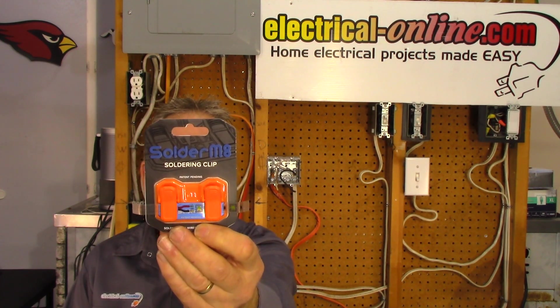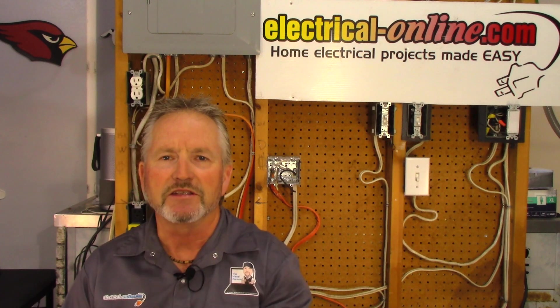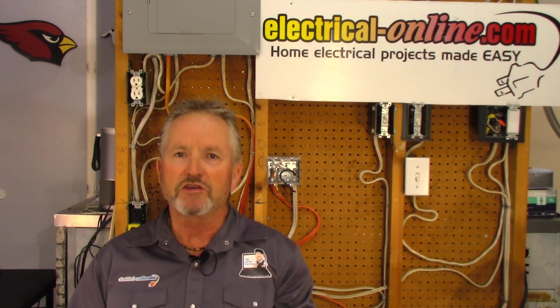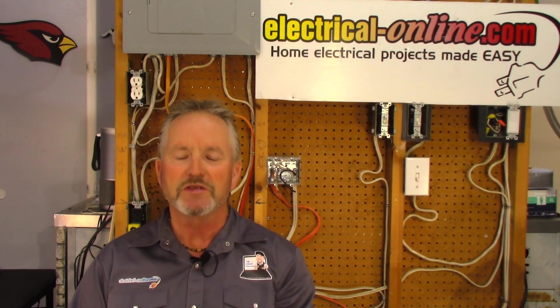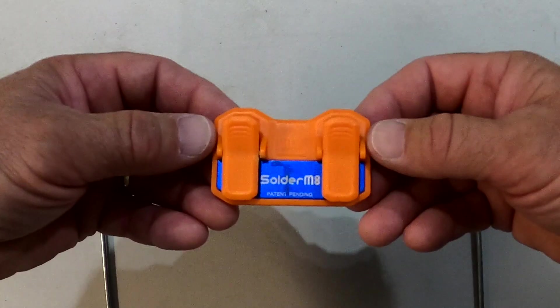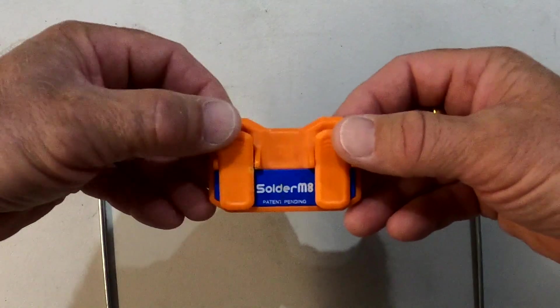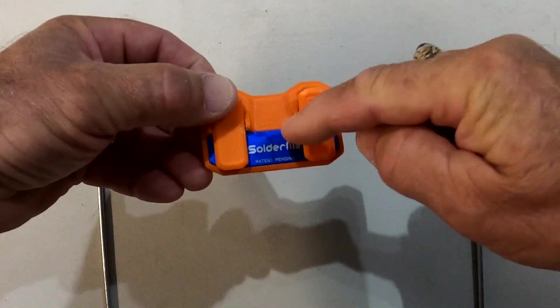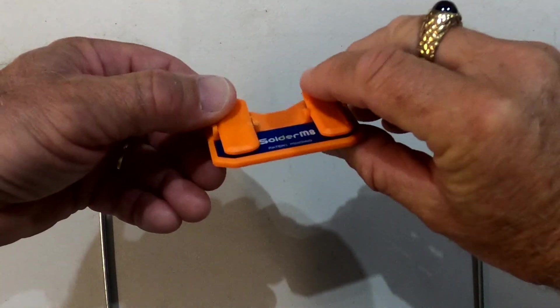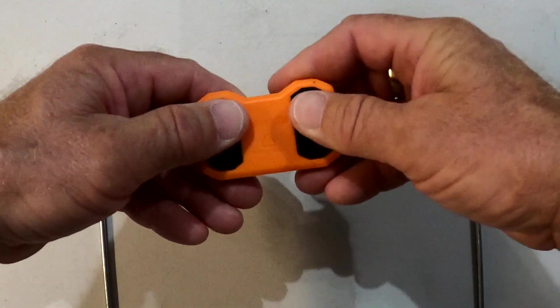Let's get started on trying to do a sample connection using the Solder Mate. Here's a close-up of the device - it's got a clip on either side, this is your soldering area here that you want to work on.